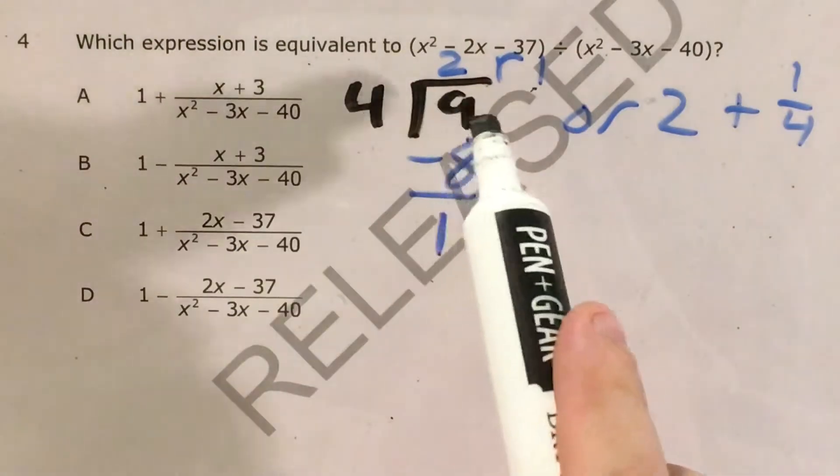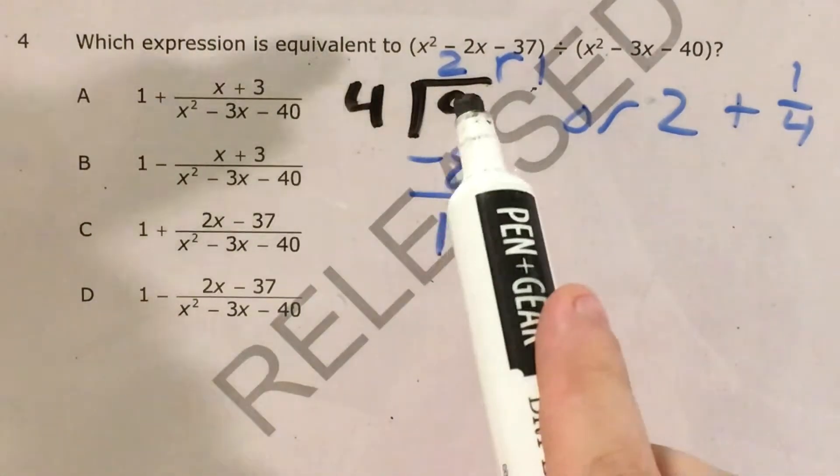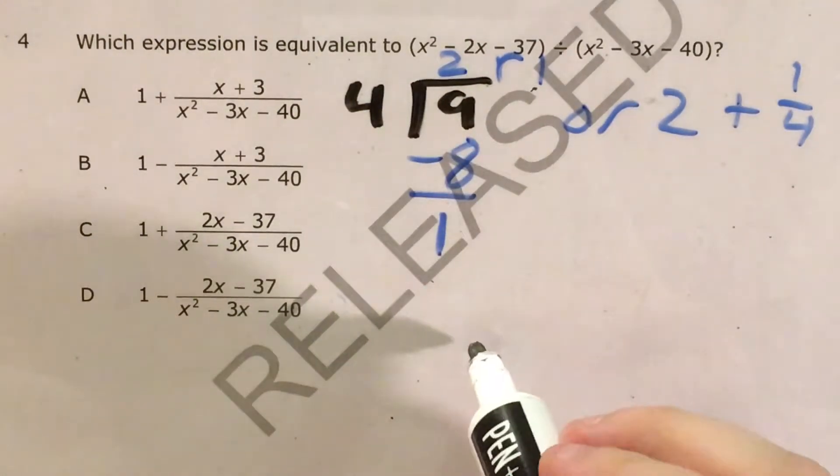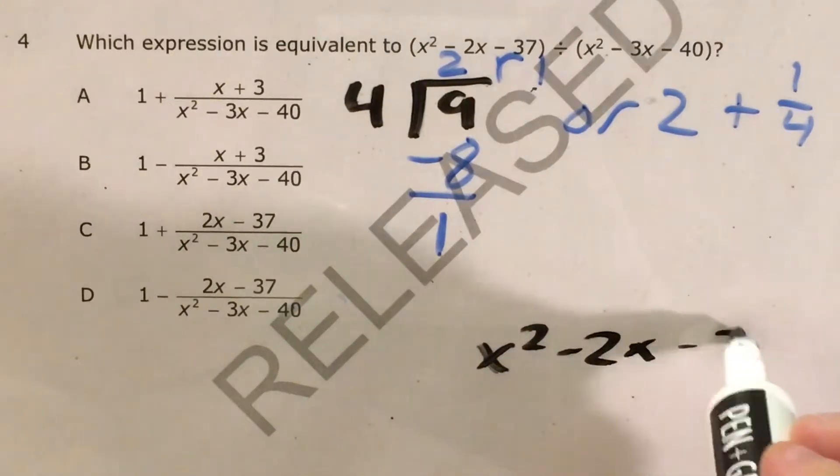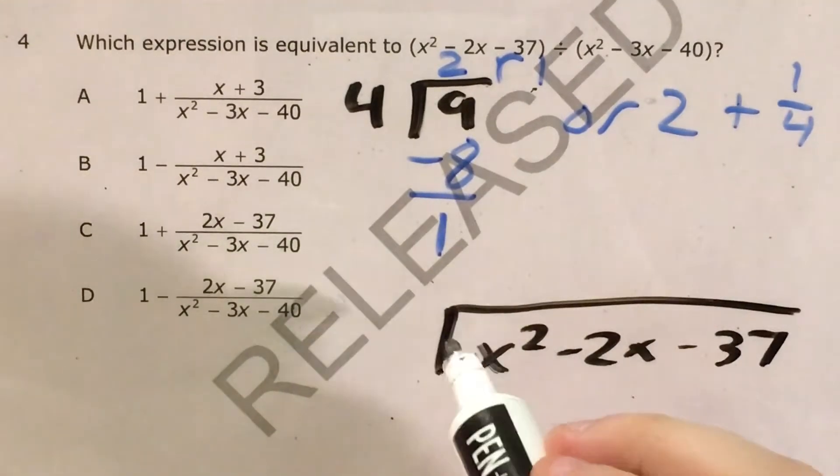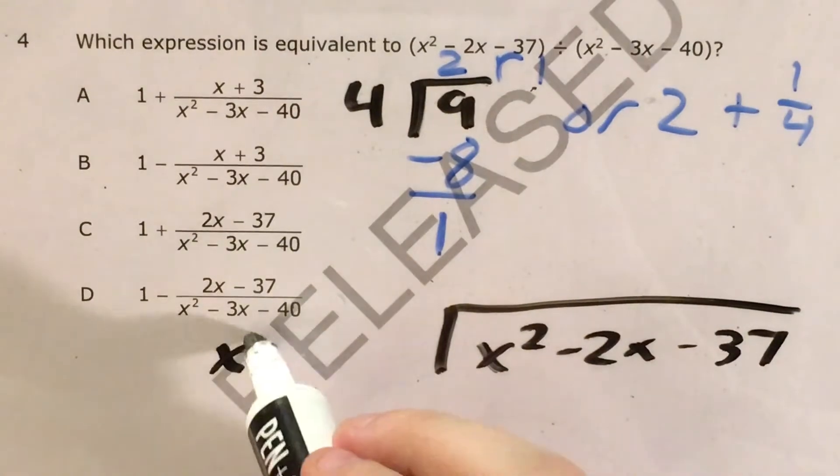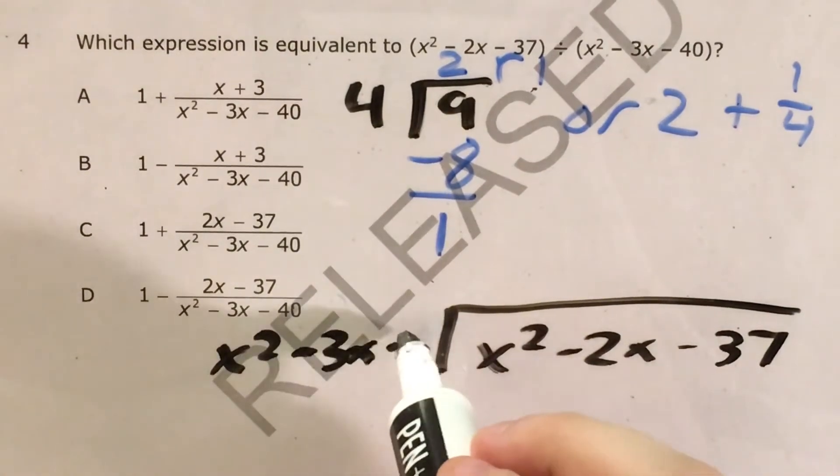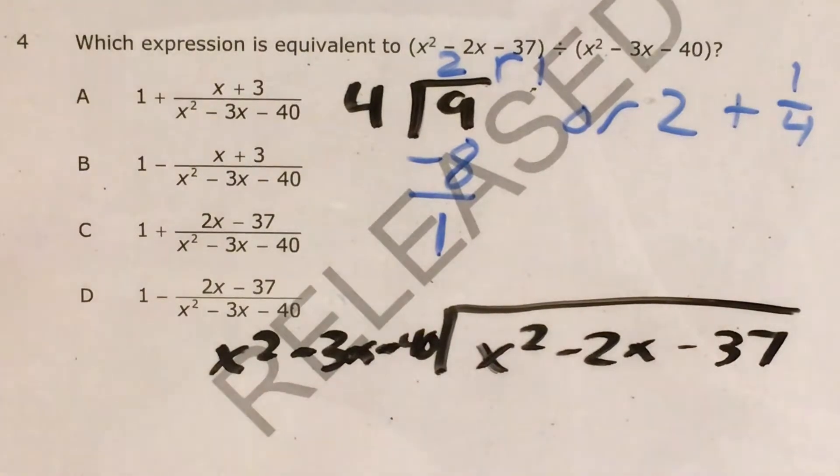I'll start by writing it in the exact same way that I wrote nine divided by four: x squared minus two x minus 37 divided by x squared minus three x minus 40. All right,